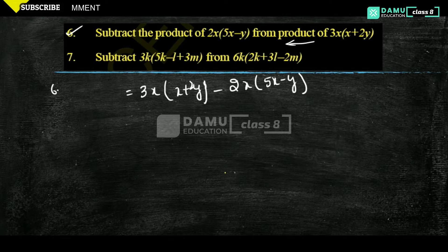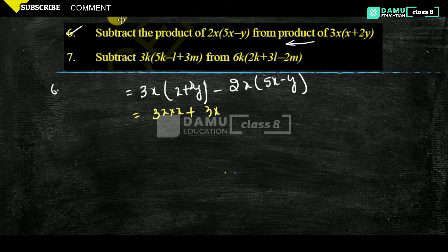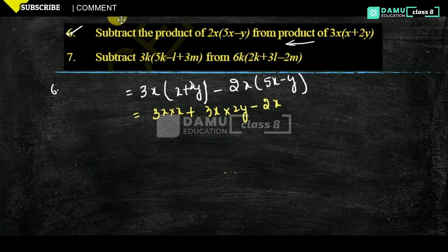Let's start here. 3x into x, plus 3x into 2y, minus 2x into 5x.